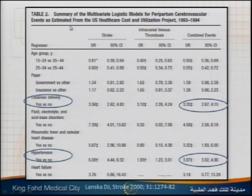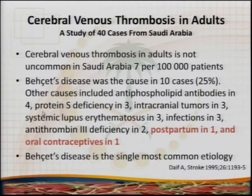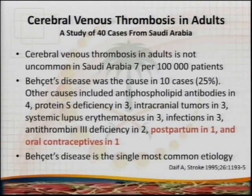A retrospective trial found that C-section and hypertension were important factors in postpartum thrombosis. In Saudi Arabia, one series done in 1995 found that Behçet's disease was the most common cause of cerebral vein thrombosis. We also have a study from our institution, KFMC, by Dr. Sinani involving about 15 patients, where the most common causes were OCP and postpartum.